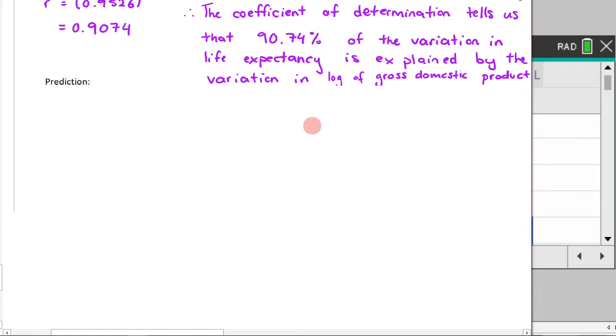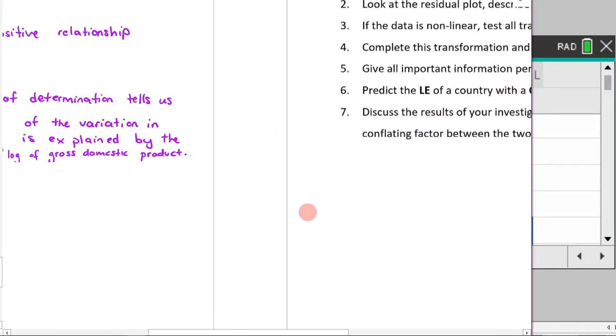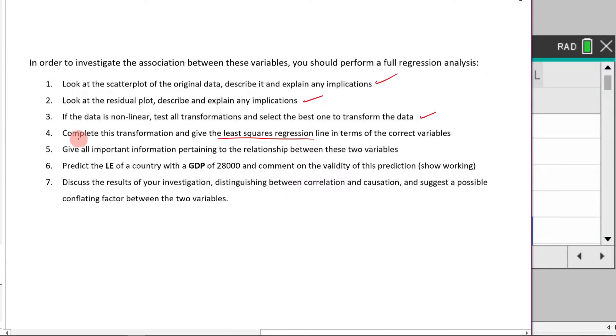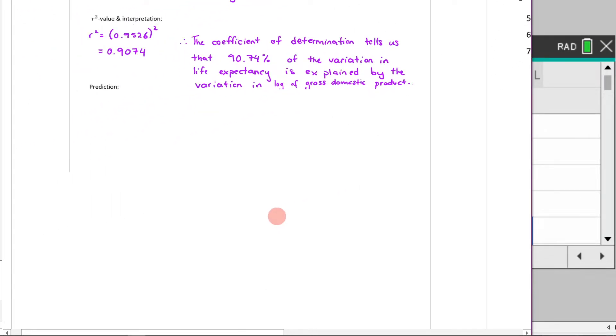Perfect. Now prediction. This is where we're going to look back at our little thing here because the prediction was specified here. So if we just read this rule again, complete the transformation and give the least square regression line in correct variables. We did that. Give all the important information pertaining to the relationship between the two variables. That's when we talked about the R and the R squared value. And we commented on them. Then it says, predict the life expectancy of a country with a GDP of this and comment on the validity of this prediction showing working.